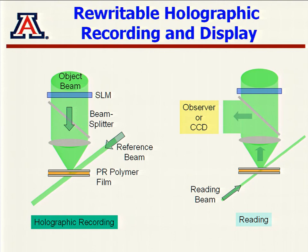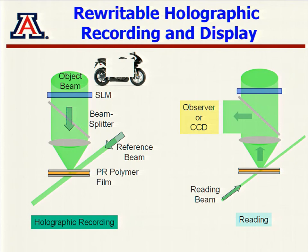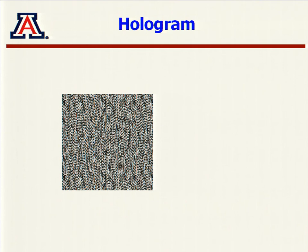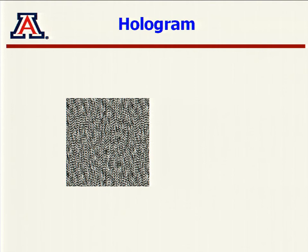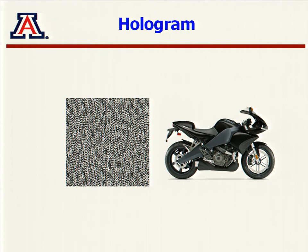How do we do our 3D display? The same concept: a reference beam and an object beam. The image you want to display is encoded on the object beam through a spatial light modulator. They interfere, and the image is stored in the index-of-refraction change. A reading beam comes in and the observer can see it. For example, if the image is a motorcycle, it's encoded into the object beam through the SLM. When you look at the interference pattern you just see bright and dark spots, but if you send the reading beam you can recover your image and the viewer can see it in 3D.